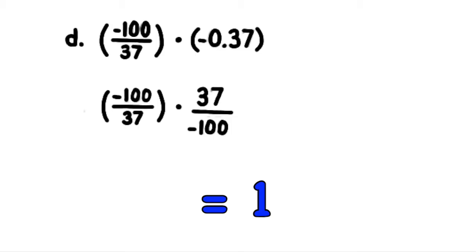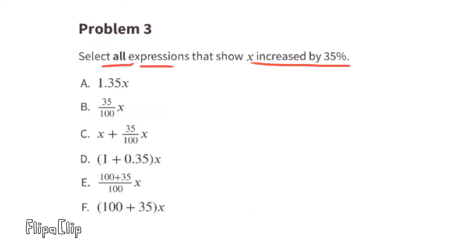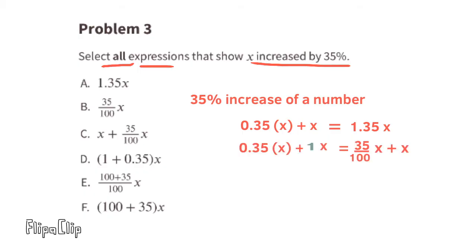Problem number 3: Select all expressions that show x increased by 35%. That means a 35% increase of a number, and we can write that as 0.35 times x, which shows the increase of the number, plus x, the original number. We can also write it as 1.35 times x. We can also think of it as 35 hundredths times x plus 1 times x, the original x. And that can be written as a fraction as well: 35 over 100 times x plus the original x.